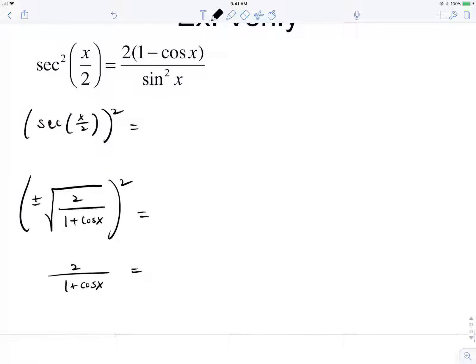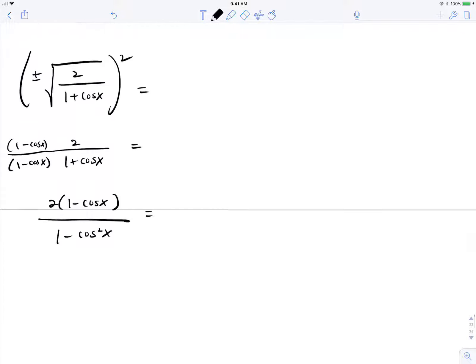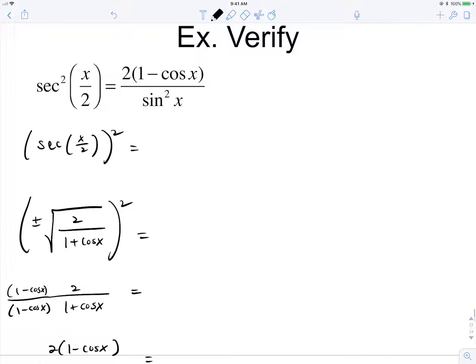And notice we have a 1 minus cosine in the numerator there. So if I multiply by 1 minus cosine over itself, I'll end up with 2 times 1 minus cosine, which is what we want, over 1 minus cosine squared. And 1 minus cosine squared by the Pythagorean identity is sine squared. So we're done. See you next bit.